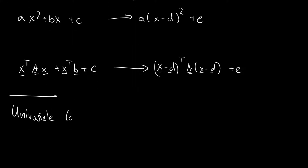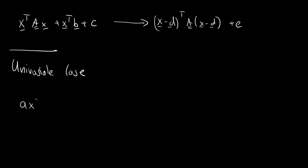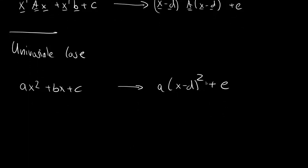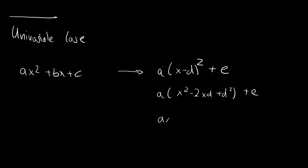For the univariate case, on the left side we are given ax squared plus bx plus c, and we want to transform it into a times x minus d in brackets squared plus e. Let us expand this expression to compare coefficients. We get a times x squared minus 2xd plus d squared, plus e. Multiplying through by a gives ax squared minus 2adx plus ad squared plus e.